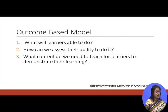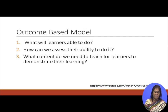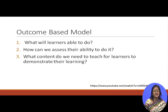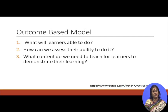The outcome based model means it is totally about what learners will be able to do. The 'do' component is very important — the skill set, not just knowing something. Knowing is important, but where they can apply it, or can they analyze it — that is very important. How can we assess the ability to do it, and what content do we need to teach for learners to demonstrate their learning?